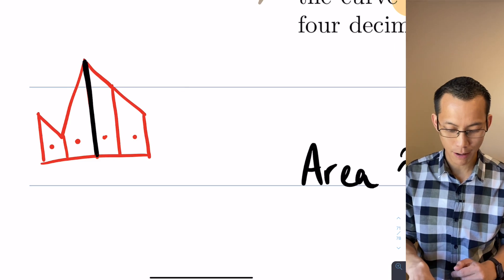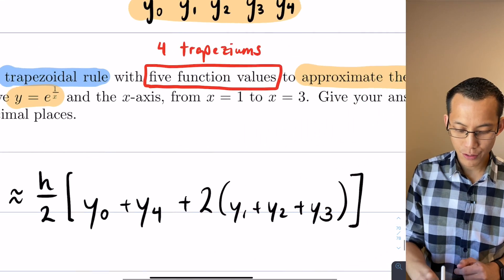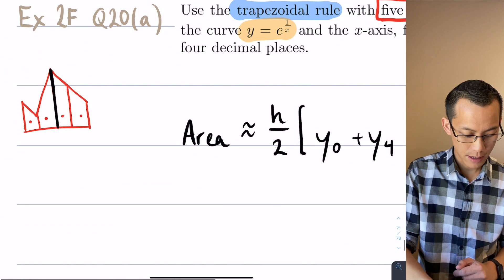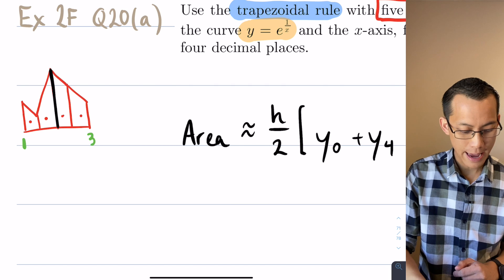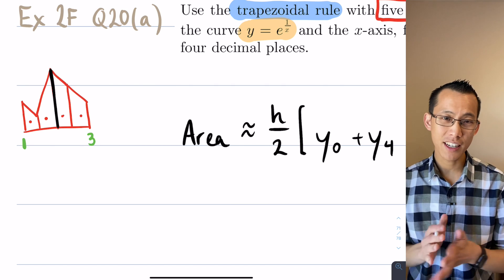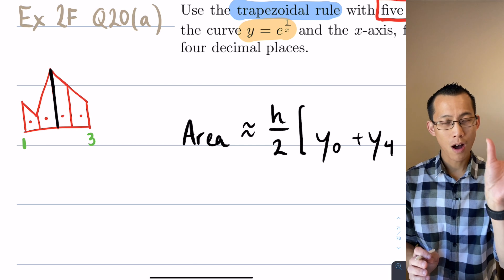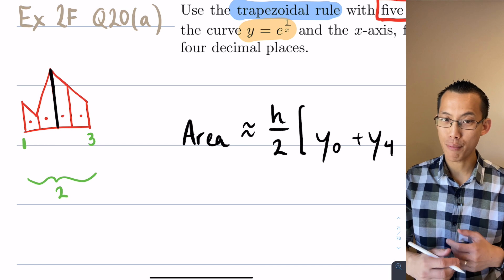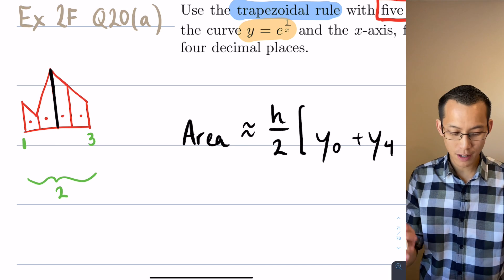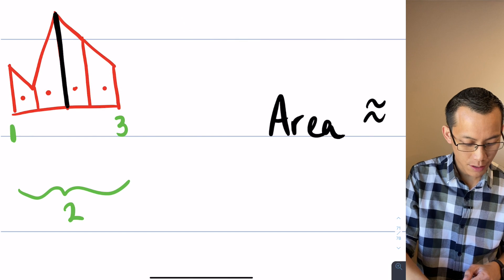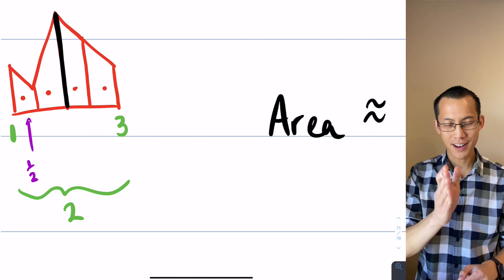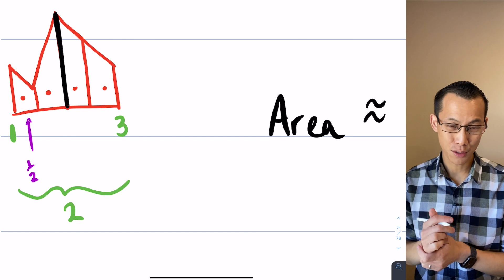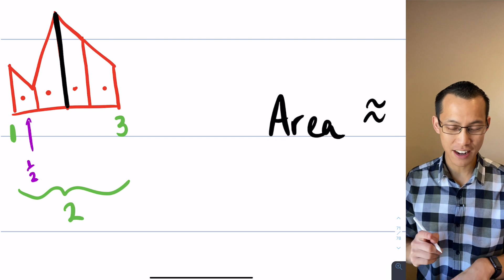The question tells us that we're going to start at x equals 1 and then end at x equals 3. So that is my start and my end. You can see from 1 to 3, if I'm breaking it up into 4 trapeziums, I need 4 equal heights going along. There's a total distance of 2. If I'm breaking that up into 4 chunks, then each of those chunks is going to be a half.